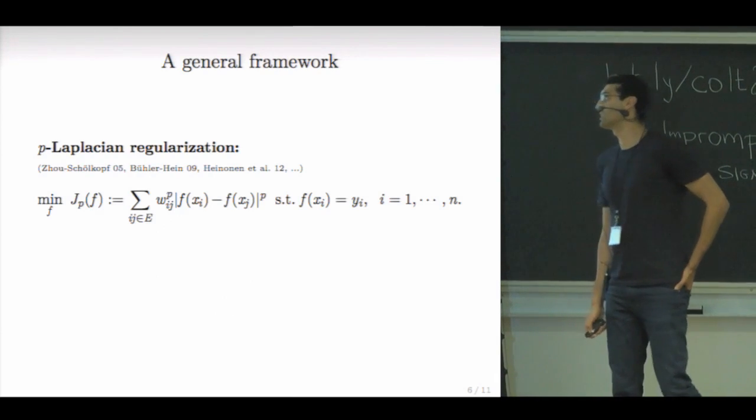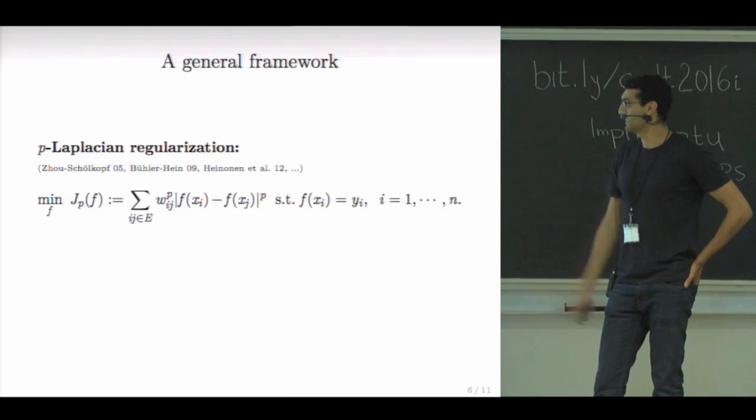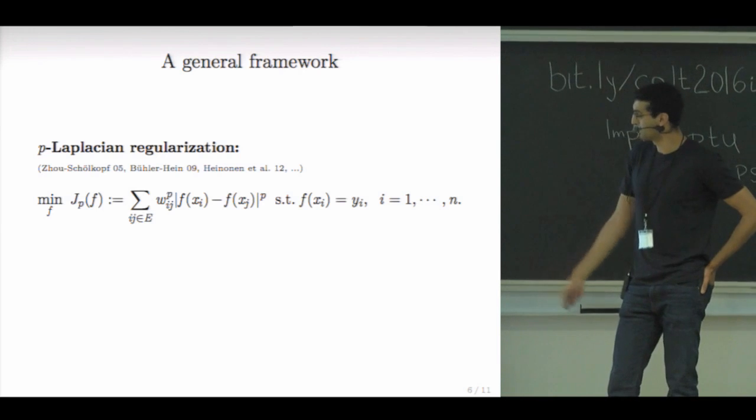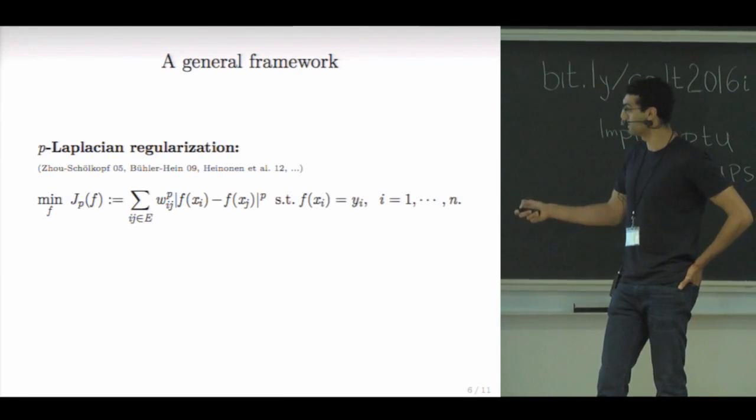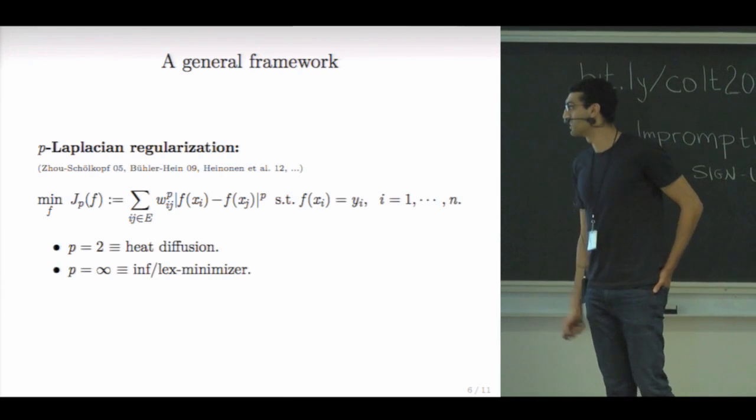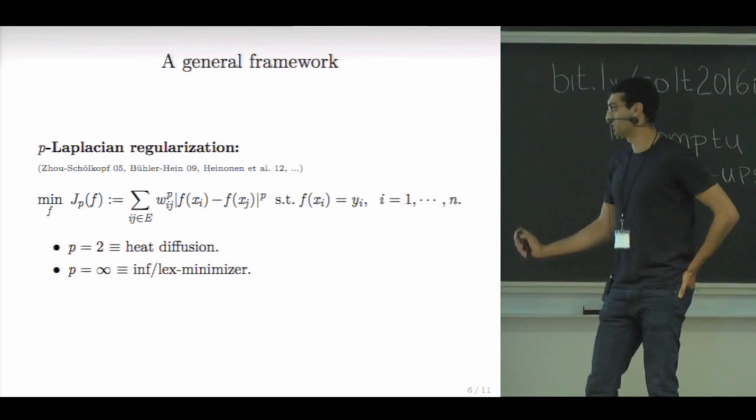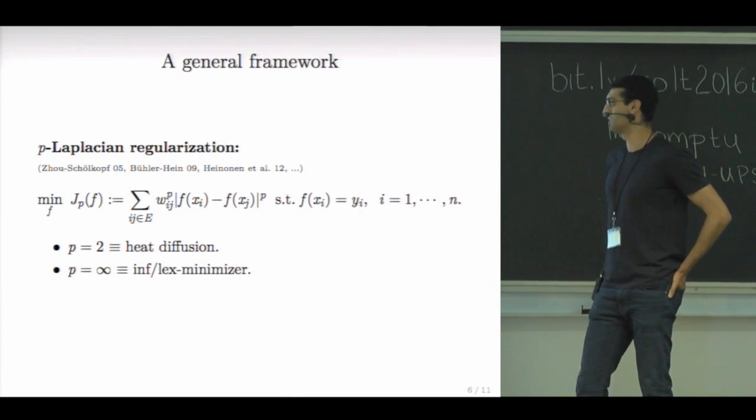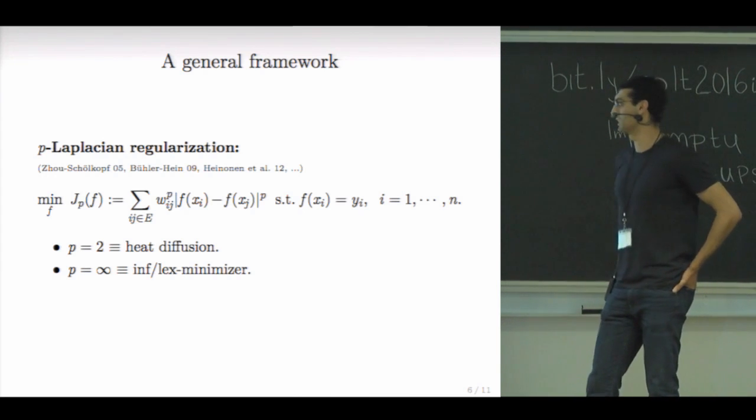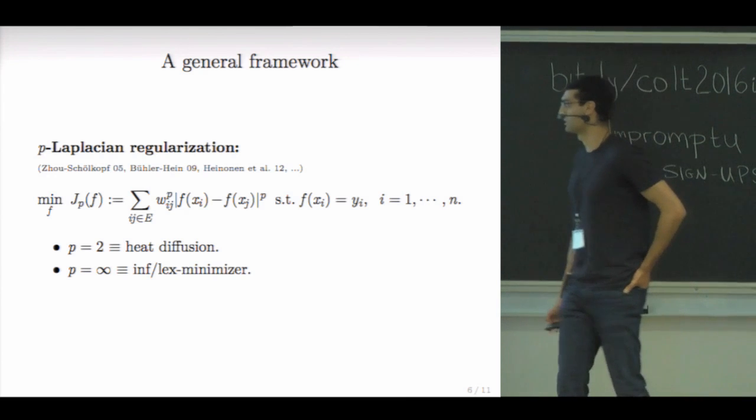So I'm going to introduce a general framework that is called P-Laplacians and I'm going to go back to the Laplacian regularization, but instead I'm going to put a power P here instead of two and I'm going to consider minimizing this form under the measurements constraints. So if we take P equals two, we get, of course, heat diffusion, which is the first attempt. And if we take the limit P to infinity, we get the second estimator that I presented.